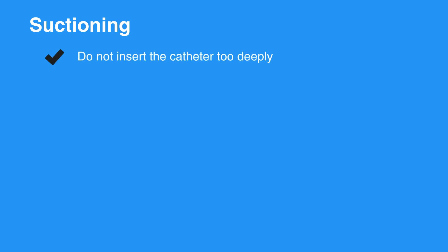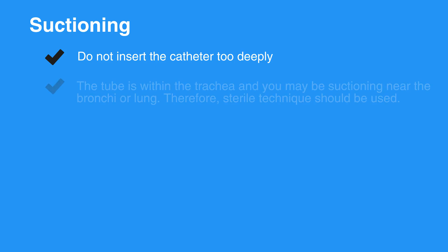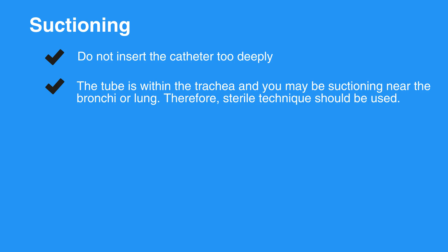Here are some tips on suctioning. When suctioning the oropharynx, do not insert the catheter too deeply. Extend the catheter to the maximum safe depth and suction as you withdraw. When suctioning an ET tube, remember the tube is within the trachea, and you may be suctioning near the bronchi or lung.